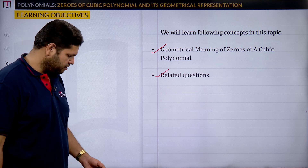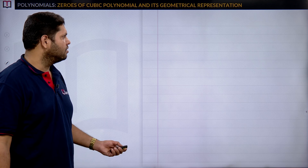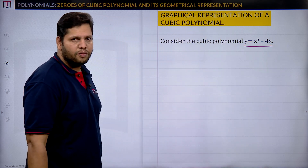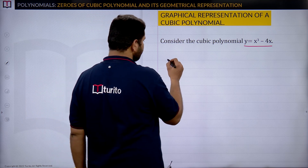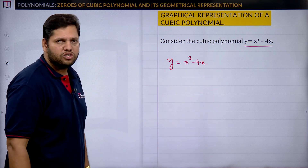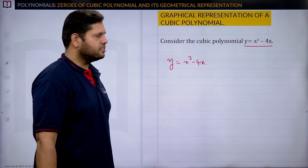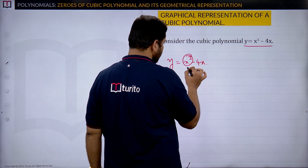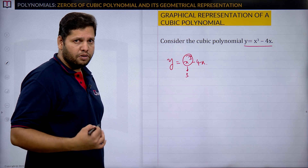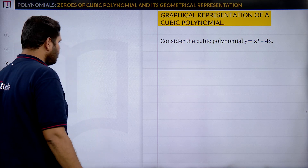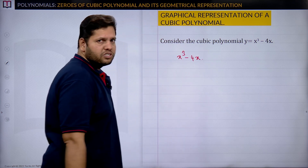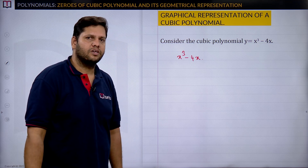Let us discuss one by one. I am taking a cubic polynomial: y = x³ − 4x. Can I say it is a cubic polynomial? Yes, because the highest exponent value is 3. If the highest exponent value is 3, we call it a cubic polynomial.